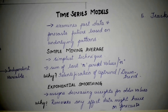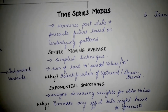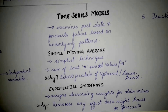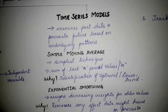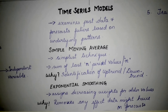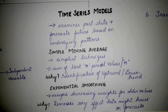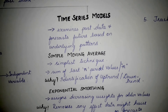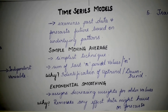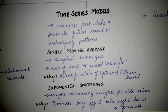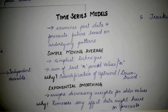Exponential smoothing. In exponential smoothing, exponentially decreasing weights are assigned for older values. This is done because it removes any effect that the older data might have on the forecast. This method helps in smoothing out the data, thereby removing any noise or effect that the past data might have on the forecasts.